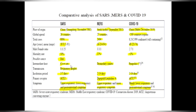Intermediate host: civet cat for SARS, dromedary camels for MERS, and pangolins (suspected) for COVID-19. Transmission is by respiratory droplets. Incubation period is 2 to 7 days for SARS, and 2 to 14 days for both MERS and COVID-19. Primary receptor: ACE2 for SARS, DPP4 for MERS, and ACE2 for COVID-19. Symptoms: SARS has upper and lower respiratory tract and gastrointestinal symptoms; MERS has upper and lower respiratory symptoms with no gastrointestinal symptoms; COVID-19 mainly has lower respiratory and gastrointestinal symptoms.